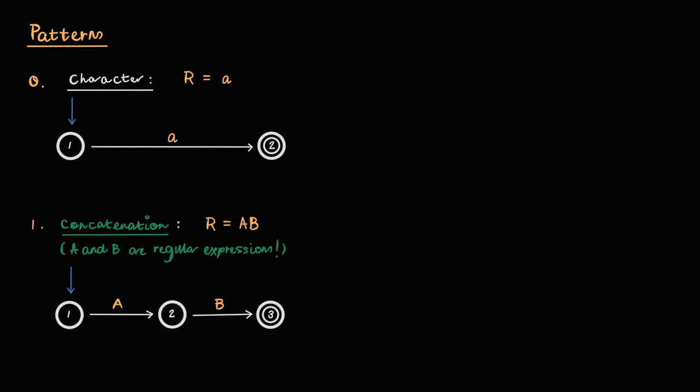If R is the concatenation of two regular expressions, A and B, then R will be represented by three states. A transition from state 1 to state 2 will represent A, and a transition from state 2 to state 3 will represent B.